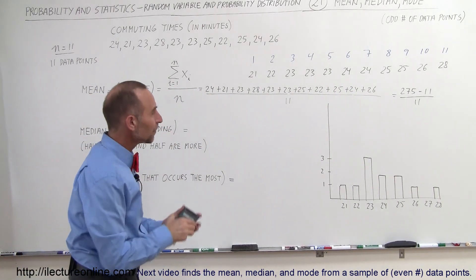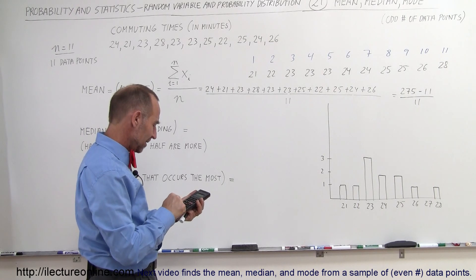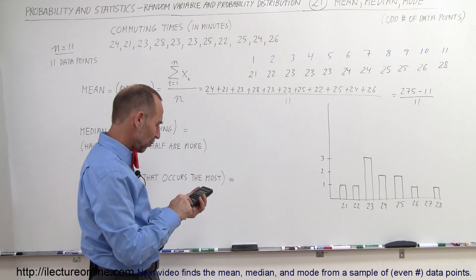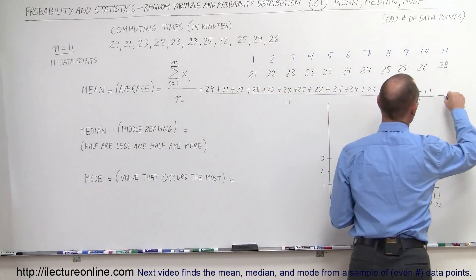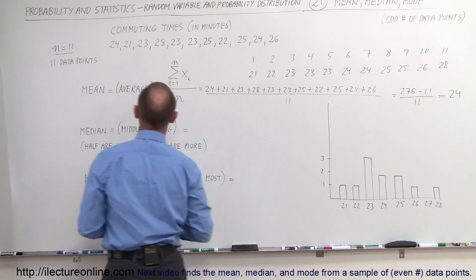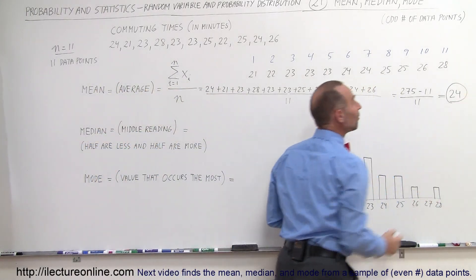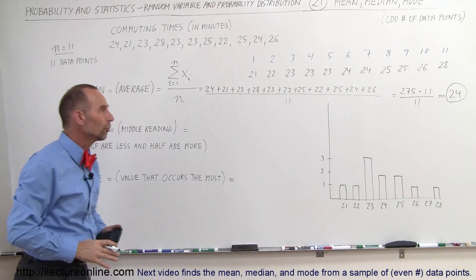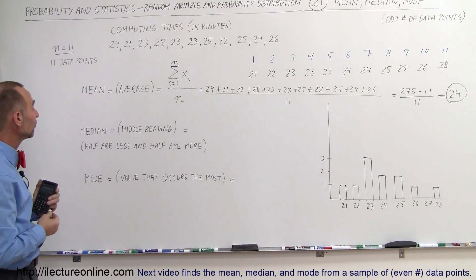Now grab a calculator, and I go 275 minus 11 equals, that's 264 divided by 11, and I get 24. So the average value of these numbers is 24. That's the average, or that's the mean, that's how we call it. So the mean or the average is 24. So the average commuting time for this person is 24.